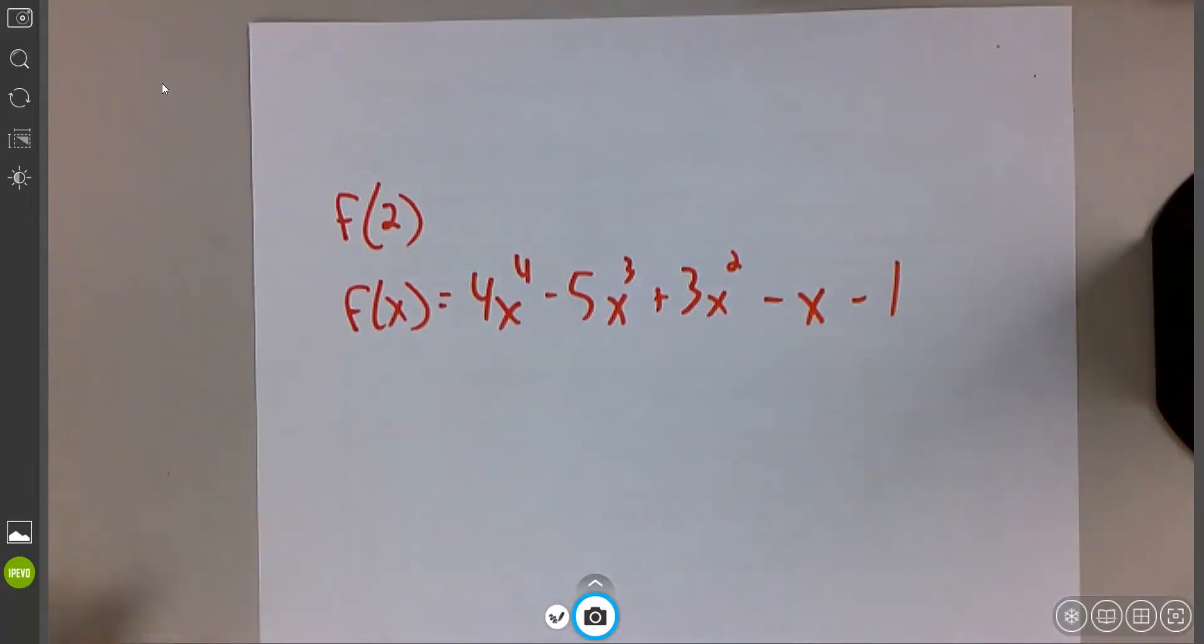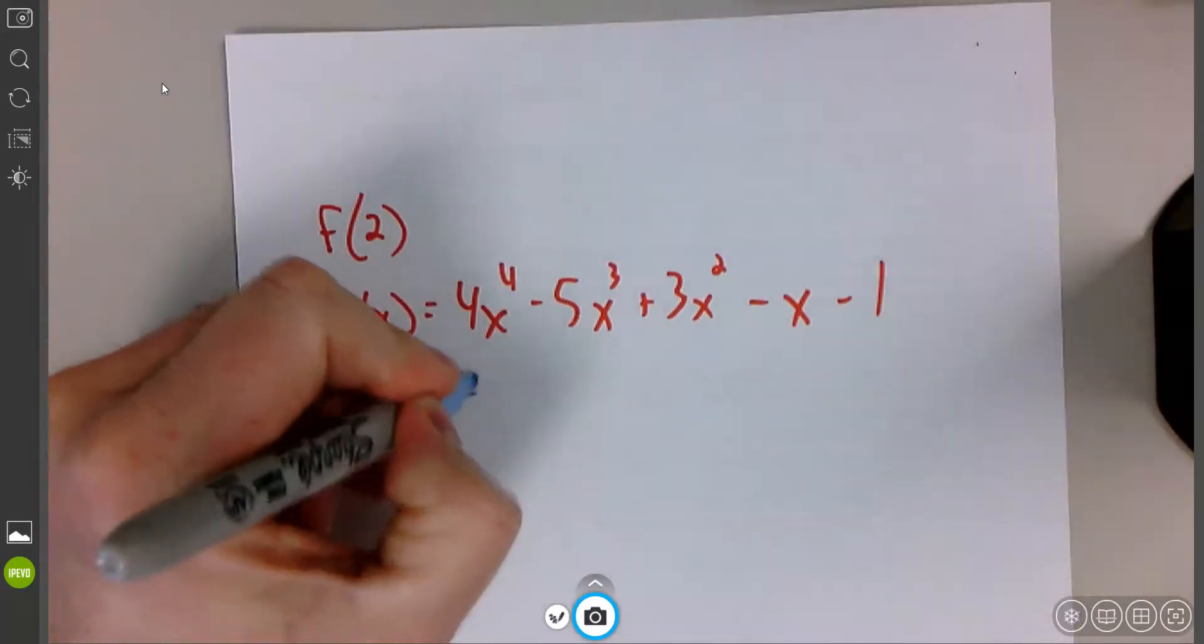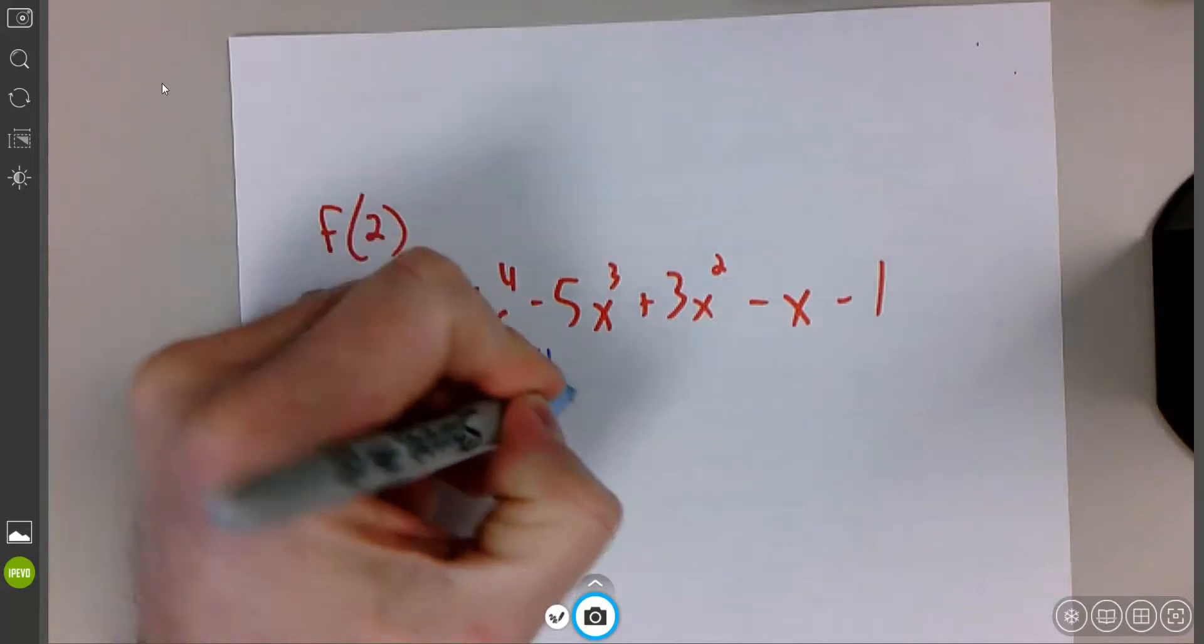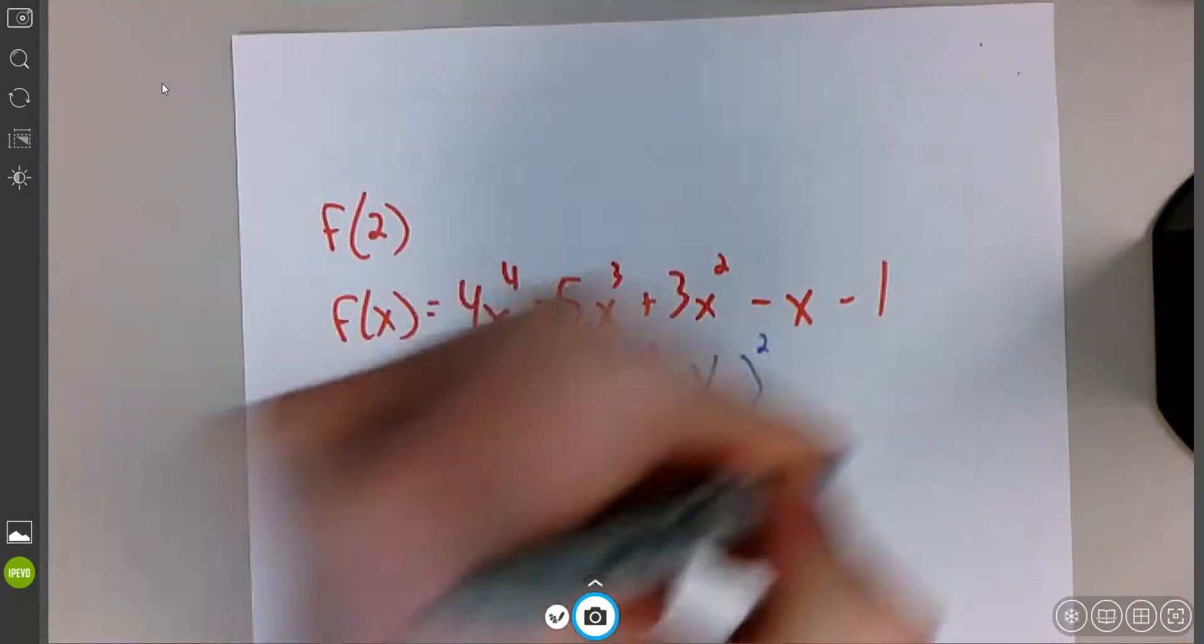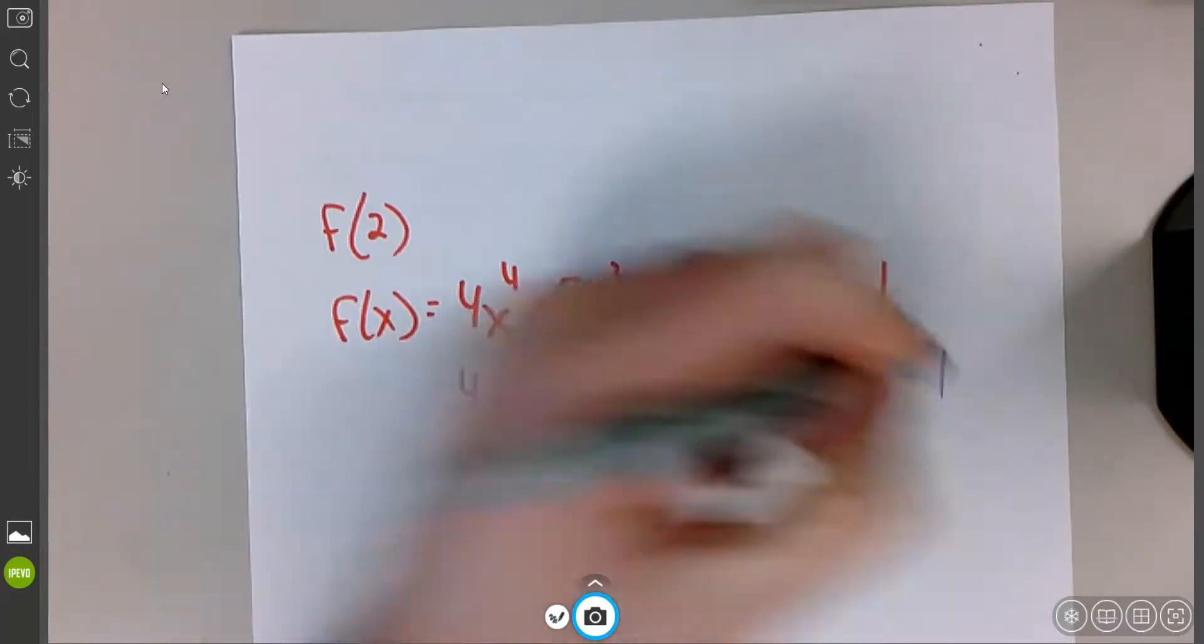I want to be able to plug in a number. What would this whole thing equal if I plugged in a 2? So to make that happen, I'm going to take all the x's out, and I'm going to put parentheses in their place, just like before, but now there's just more to it. 4x to the fourth, 5x cubed, 3x squared, minus x, minus 1.